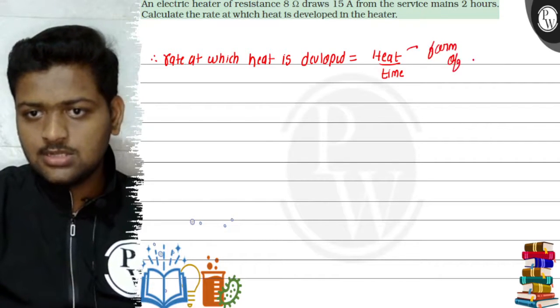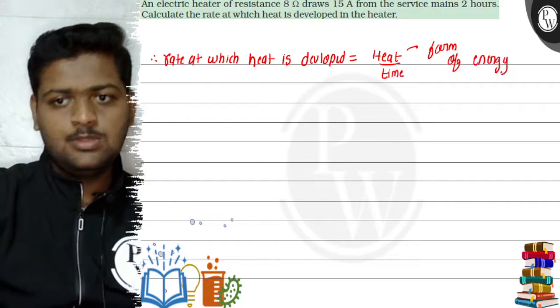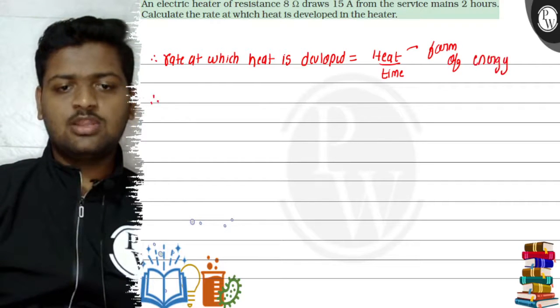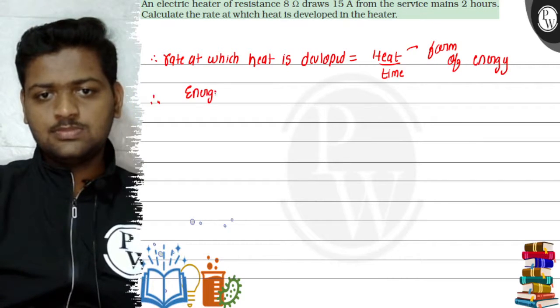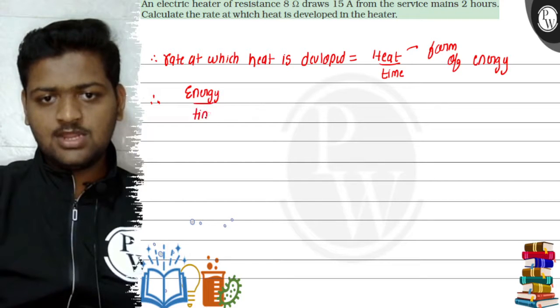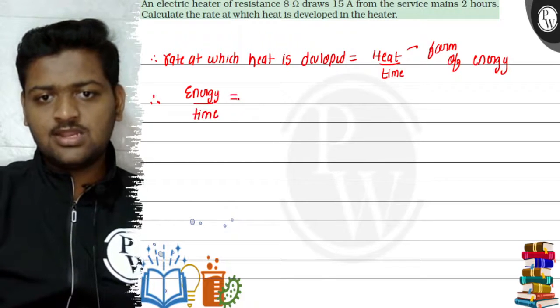So it is heat upon time. Now heat is nothing but a form of energy, right? Heat is nothing but a form of energy, so this formula gets transformed to somewhat like this, which says energy upon time. Can we write like this? Yes, definitely we can write like this.